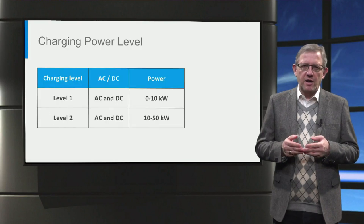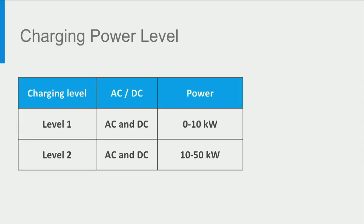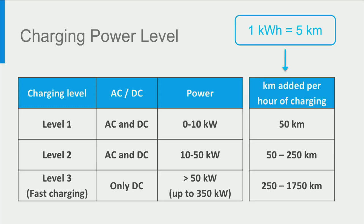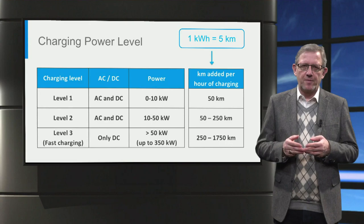With AC and DC charging, the charging power can be split into three levels, Level 1 up to Level 3. Generally, Level 1 refers to charging power up to 10 kW, while Level 2 refers to charging power up to 50 kW. Both AC and DC charging can provide Level 2 charging power. Beyond 50 kW, only DC charging using an off-board charger is used to provide charging power as high as 350 kW. Level 3 charging is often called fast charging. If we assume that an electric vehicle can drive 5 km using 1 kWh of energy, these charging powers can be translated into km of range added per hour of charging. We can easily see how Level 1 and Level 2 charging is sufficient for daily commuting needs and Level 3 charging is useful for quick highway charging.